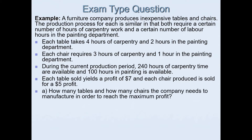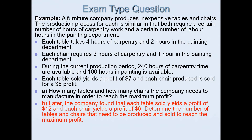This question was covered in the previous video, so please check that one out. It asked how many tables and chairs the company needs to manufacture to reach maximum profit — that was the achieve level. Now the second part says: later the company found new profit figures.